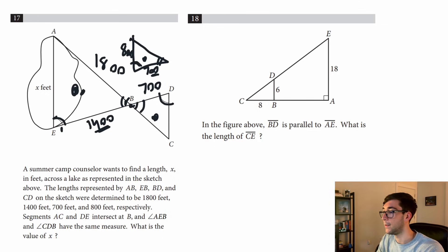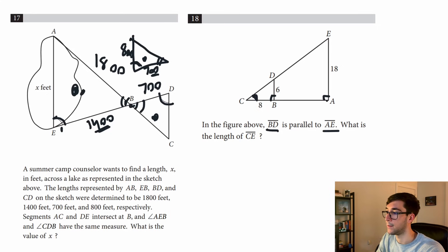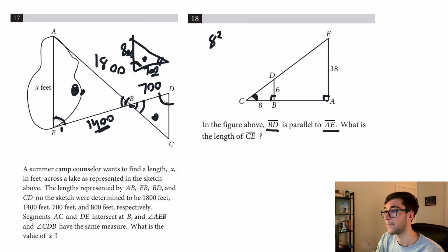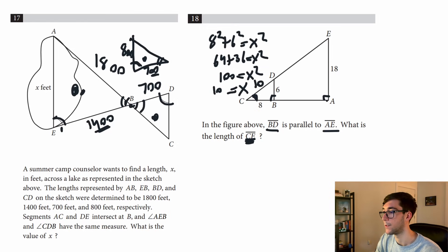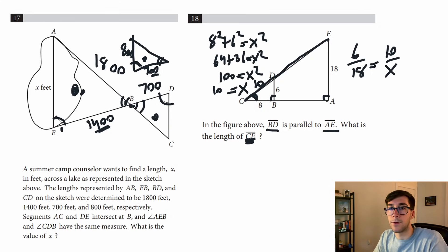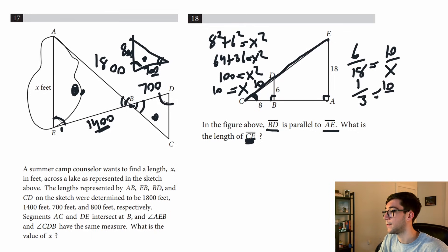Problem 18 also uses similar triangles. BD is parallel to AE, so the corresponding angles are equal right angles, and the triangles share an angle — angle-angle similarity confirmed. Filling in: sides are 8 and 6, so by the Pythagorean theorem, 8 squared plus 6 squared equals x squared, giving hypotenuse equals 10. We're looking for CE. The proportion is 6 over 18 equals 10 over x. Reducing to one-third equals 10 over x, cross-multiplying gives x equals 30.